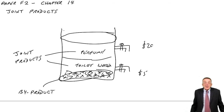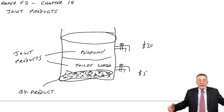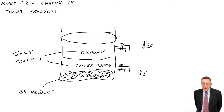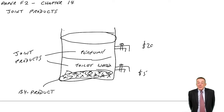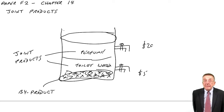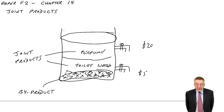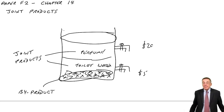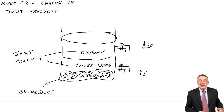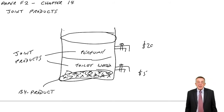A by-product is not something we're specifically producing — it's not a third product we're trying to sell in the shops. It's more waste than anything; it happens almost by accident. But if the farmer is prepared to buy the dead flowers from us, obviously at a much lower price than perfume and toilet water, then any money is worth getting.